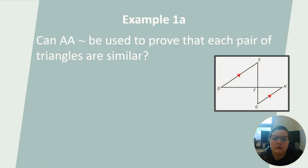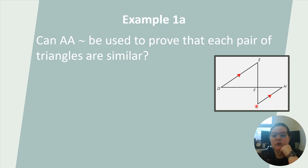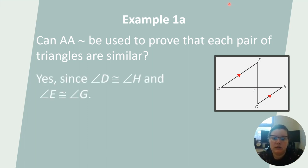Let's use the angle-angle similarity postulate to prove that each pair of triangles are similar. It looks like we have parallel lines here — GH is parallel to DE. Because of the parallel lines, angle D and angle H are congruent, and angle E and angle G are congruent, because these are alternate interior angles cut by the transversal. So we can use the angle-angle similarity postulate to prove this pair of triangles are similar.